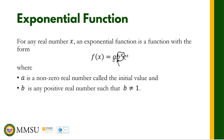Only b is raised to x, so x is our independent variable — and in an exponential function, the independent variable is in the exponent. Note that a can be positive or negative, but b is restricted to positive real numbers only.